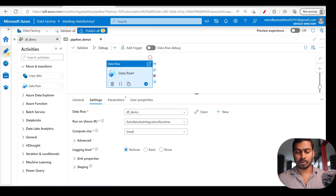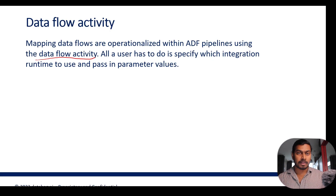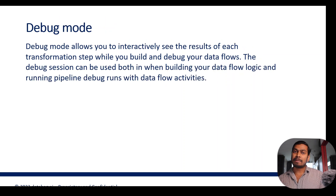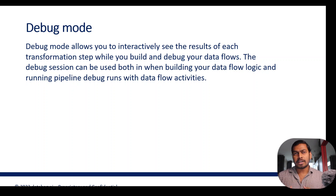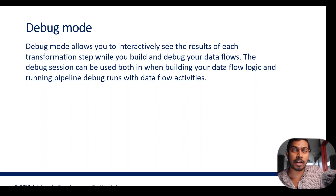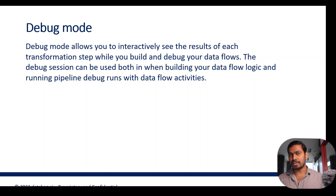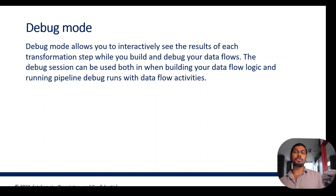You also configure the integration runtime where you want to execute it, save it, and add a trigger so it runs on a schedule. That is how you create a data flow, use it in a pipeline, and add triggers on top. There's also a debug mode within data flow — let's say you're building transformations with two sources, a join, and an aggregate step; debug mode lets you see how your data looks at each step without running the whole flow.